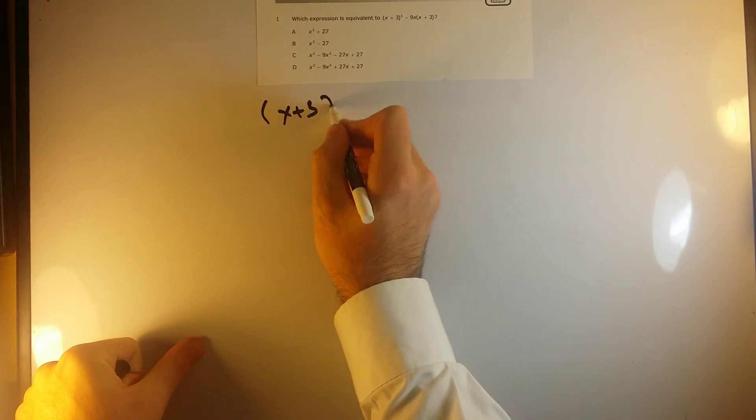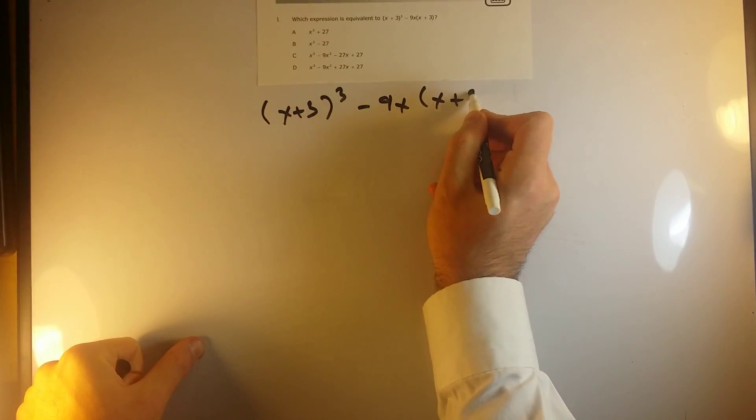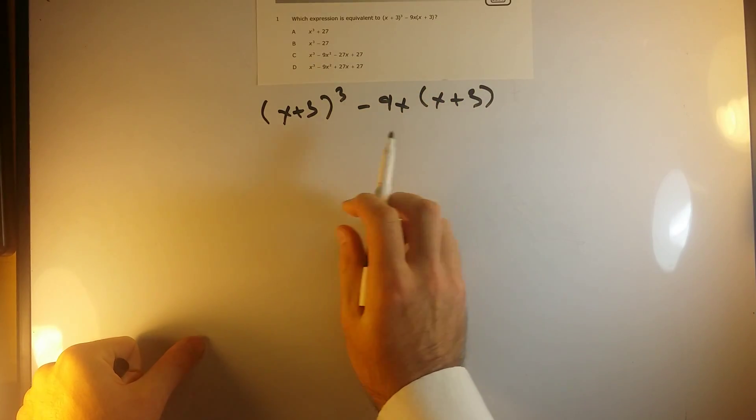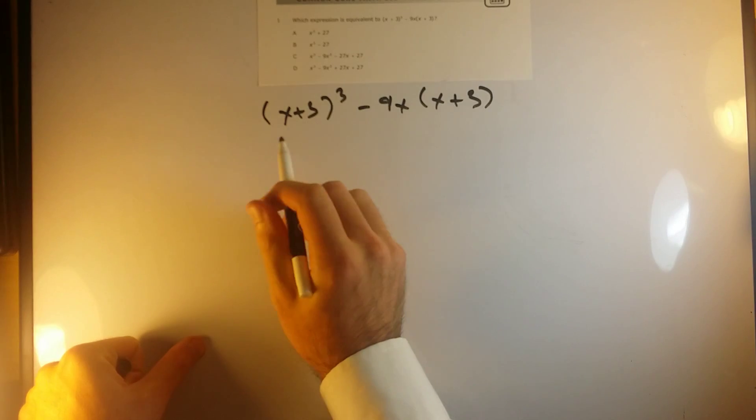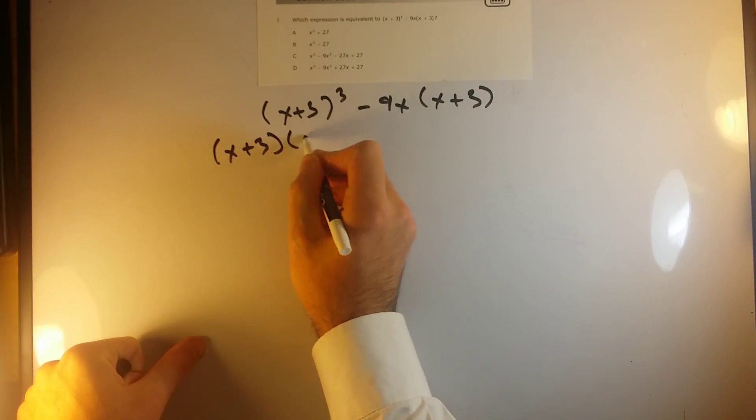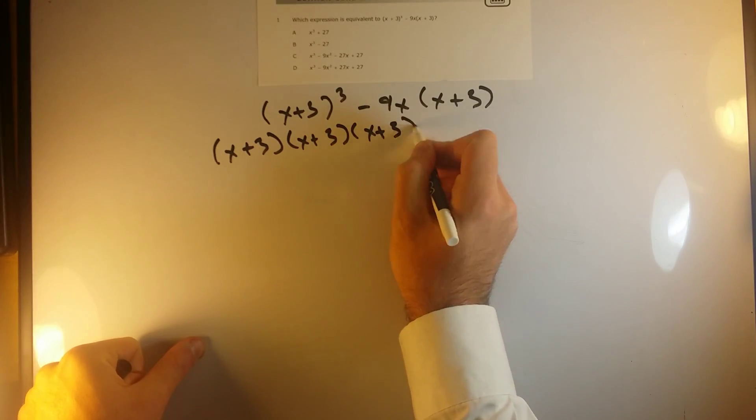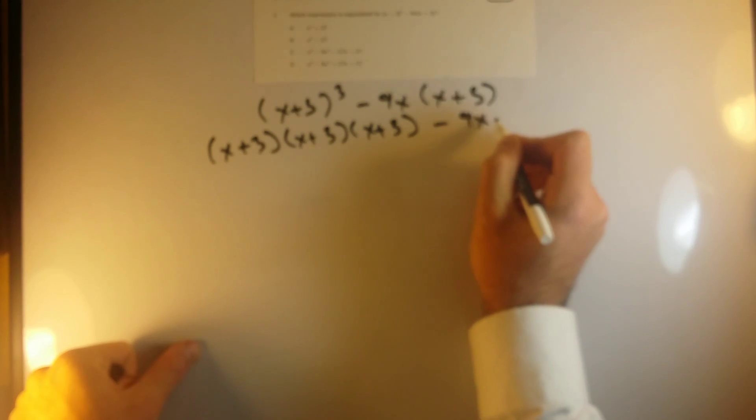So let's see, we've got x plus 3 cubed minus 9x times x plus 3. Okay, so to simplify this, I'm just going to rewrite x plus 3 cubed as, that just means x plus 3 times x plus 3 times x plus 3 minus 9x times x plus 3.